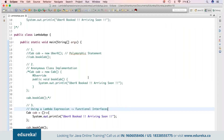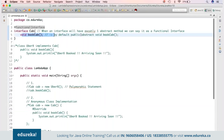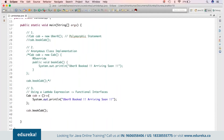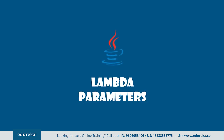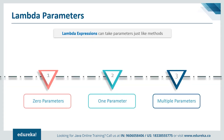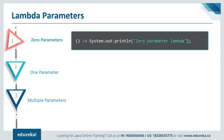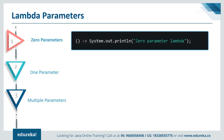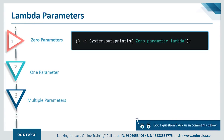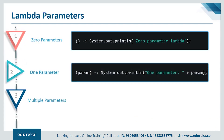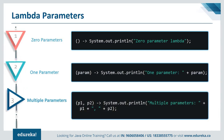A functional interface always contains one single method, which itself is binding for us. Lambda expressions can take zero parameters — like empty parentheses — one parameter, or multiple parameters. For zero parameters, we don't pass anything in the parentheses. For one parameter we can pass 'param', and for multiple parameters, for example 'p1' and 'p2'.